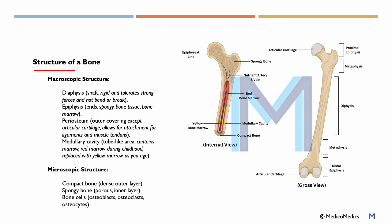Now, let's turn our attention to the structure of a bone. We divide it into macroscopic and microscopic structures. In the macroscopic one, we have the diaphysis, the epiphysis, the periosteum, and the medullary cavity that are very important.